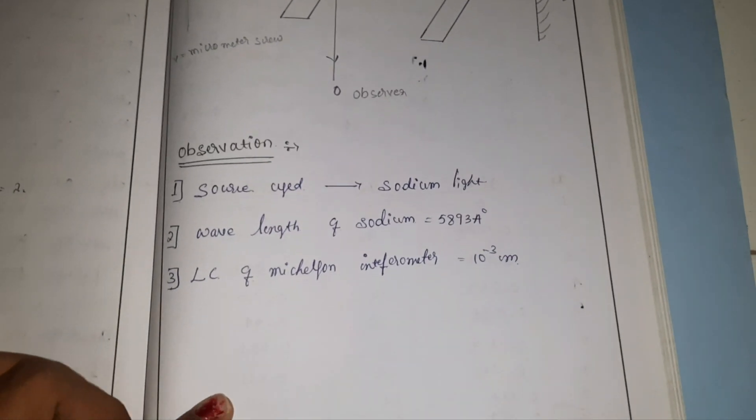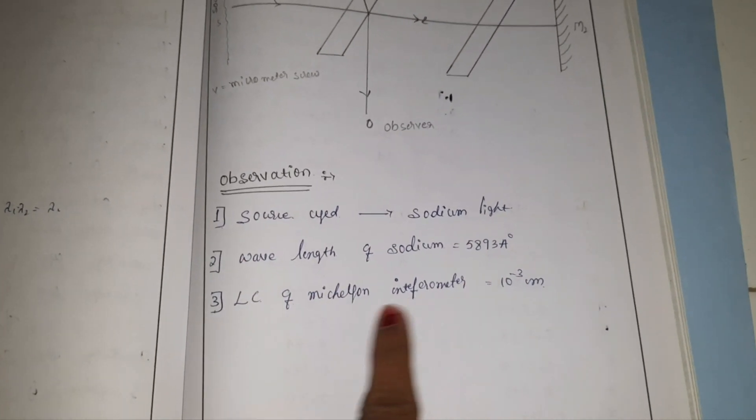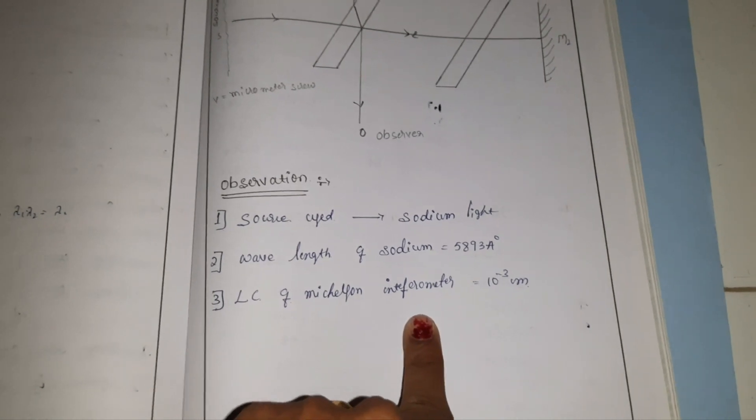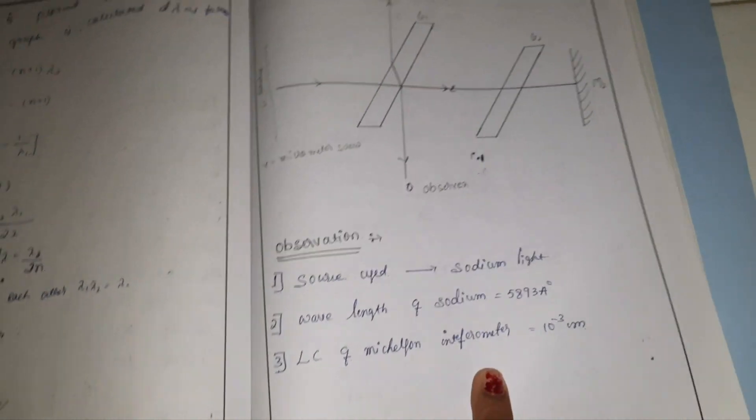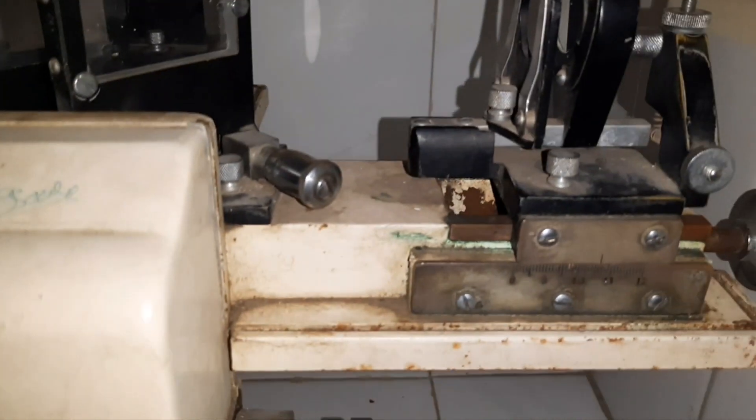Before taking the readings, you should note the observations: sodium light wavelength and the least count of the interferometer. You can calculate the least count using the two scales — one is the vernier scale and the other is the main scale. With the help of these, the least count will be 0.0001.